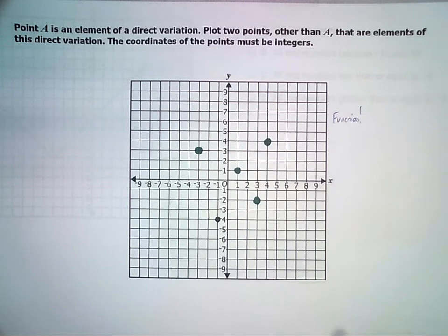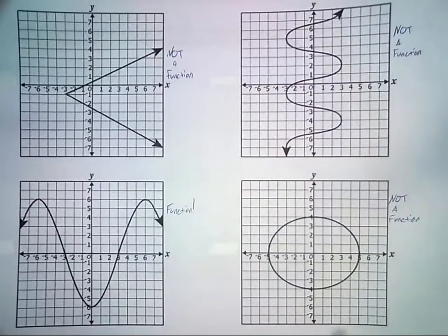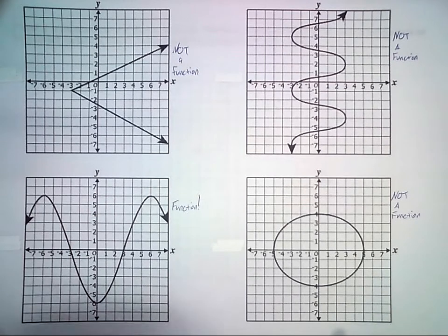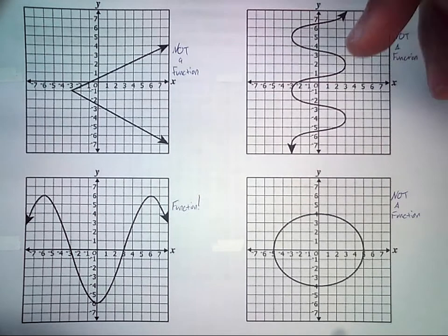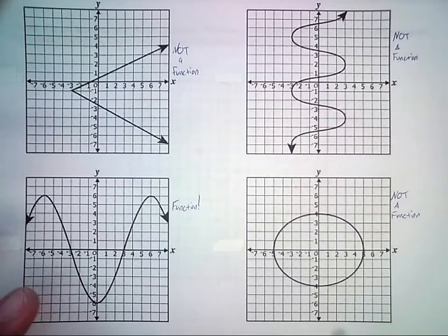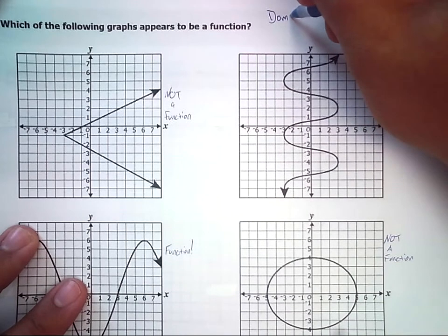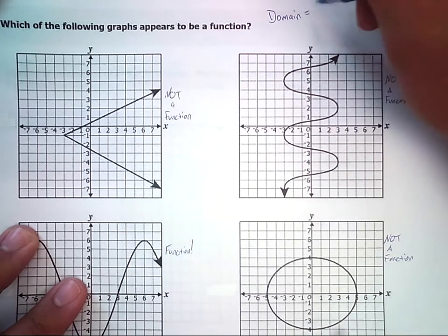Let's go ahead and take a look back at the other graph page. Now, domain and range. What that is, is domain is the values from left to right, and range is the values from down to up.